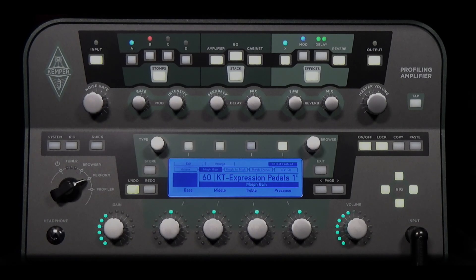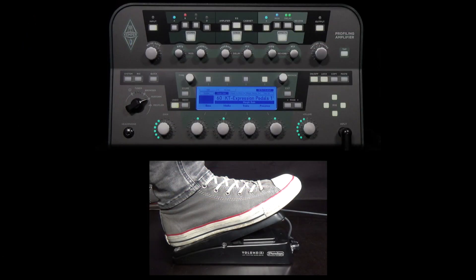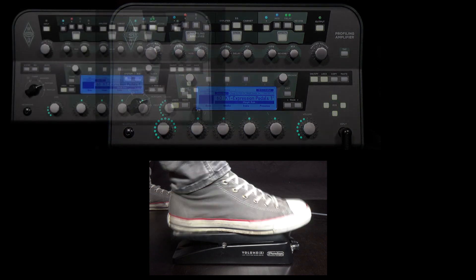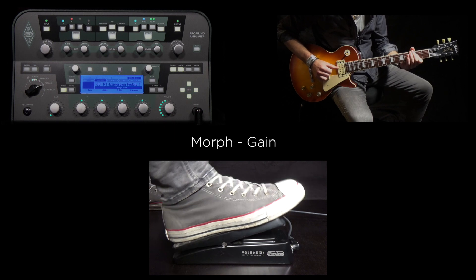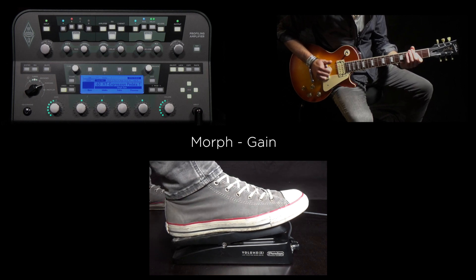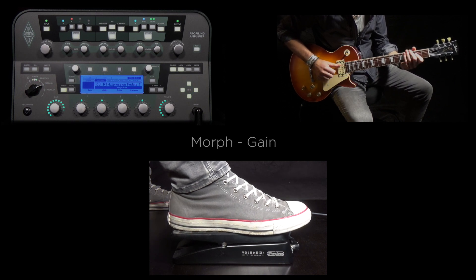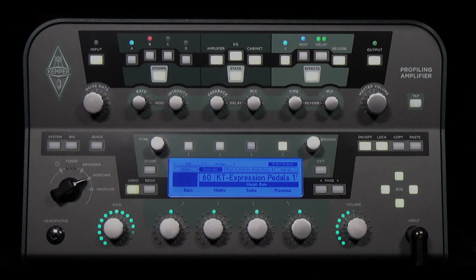With morphing, you can blend seamlessly between two sound settings within a single rig. For example, you can control the amount of distortion using a pedal. First, you select the gain setting for the heel position, then you set the gain value for the toe position. This range can be seamlessly controlled by the pedal. You do not have to make any special settings for the morphing — the profiler will remember everything automatically. You should not forget to save the rig though.